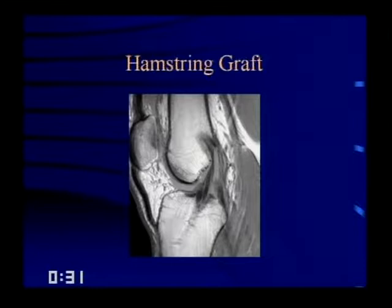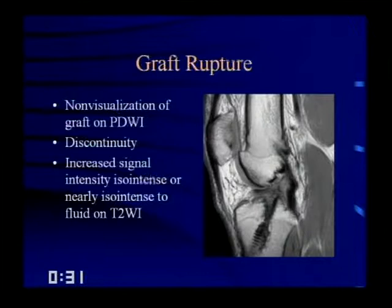Graft ruptures: non-visualization of the graft on proton density or any images, or if it's discontinuous. Increased signal intensity isointense or nearly isointense to fluid on T2-weighted images is also abnormal.